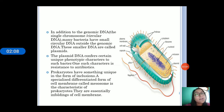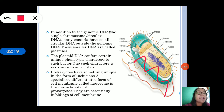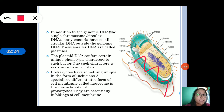Prokaryotes have something unique in the form of inclusions. These are infoldings in the membrane known as mesosomes. These mesosomes help in many processes like respiration, DNA replication, cell wall formation, and many other processes.